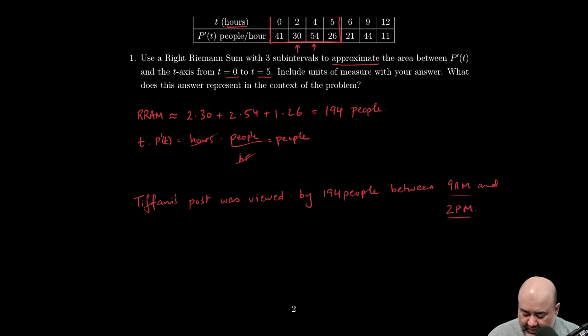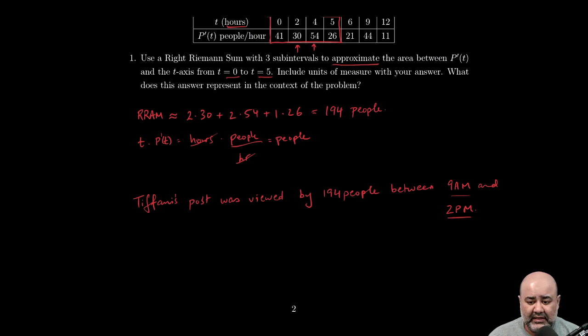Please, please, please remember to make sure that you change your time scales based on what the original question gives you. If you mark it as t equals zero and t equals five, you're not going to get full credit for that.